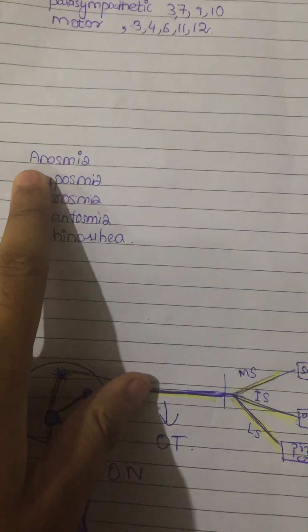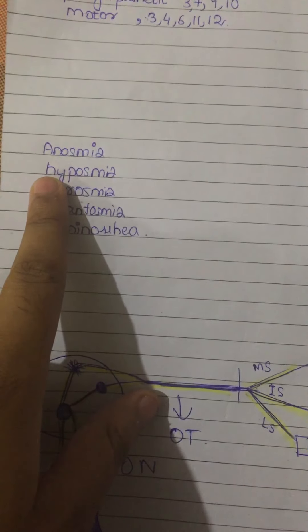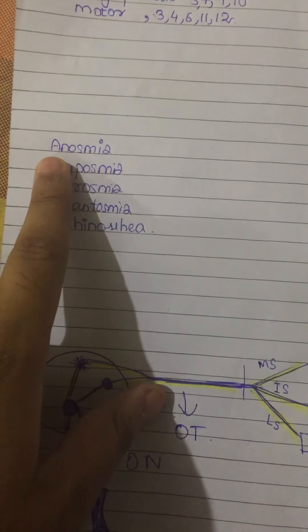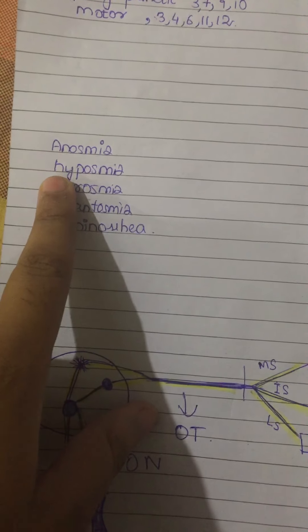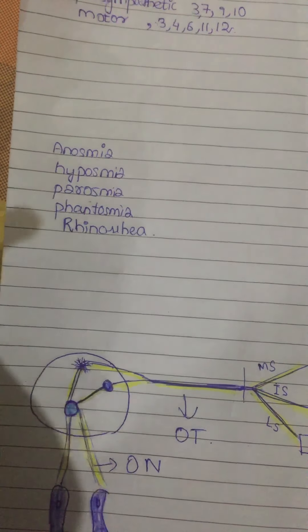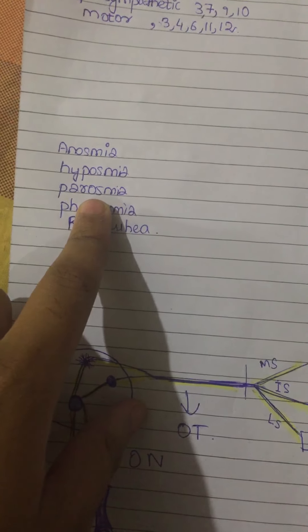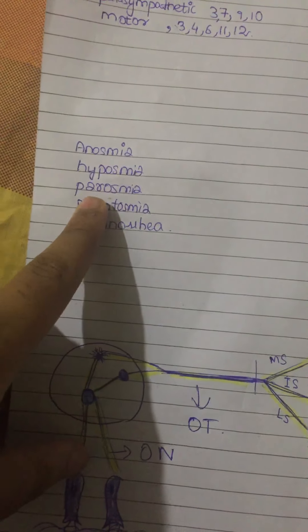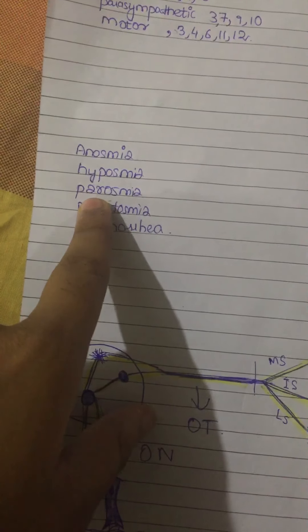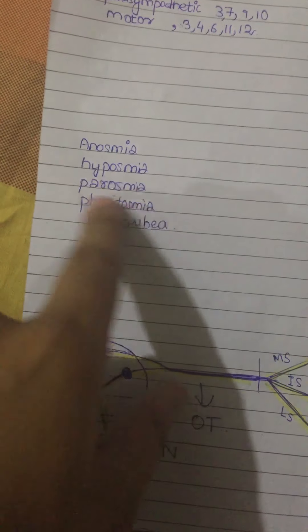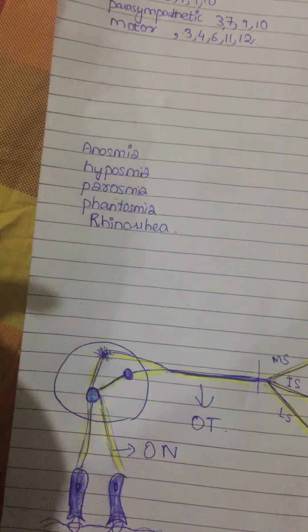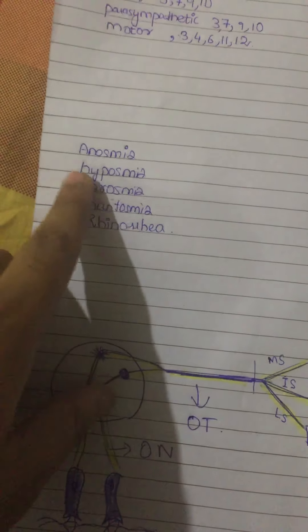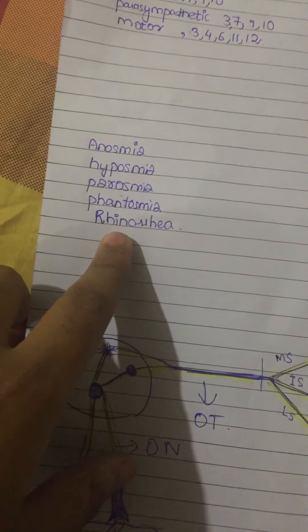The function of the olfactory nerve is smell. Disorders include: anosmia, when the person cannot smell at all; hyposmia, when the sense of smell is reduced but still present; parosmia, when the person smells something different from what is actually there, or experiences exaggerated smell; phantosmia, which is a hallucination of smell where no odor is actually present; and rhinorrhea, associated with allergic rhinitis due to certain allergic reactions.